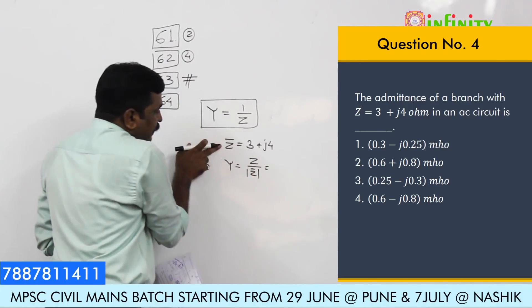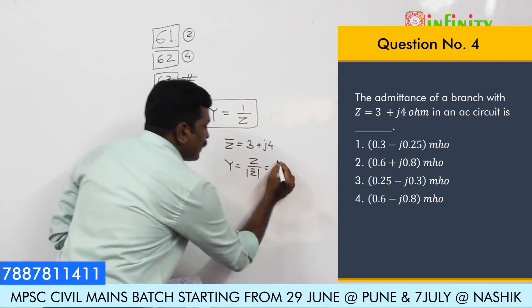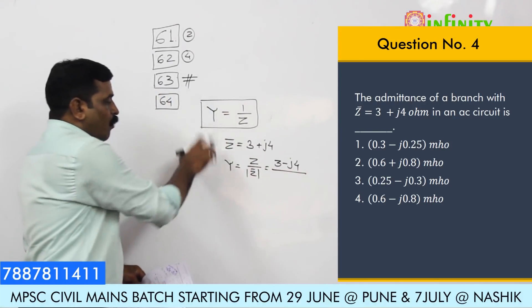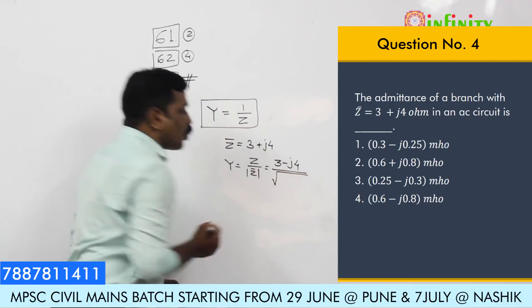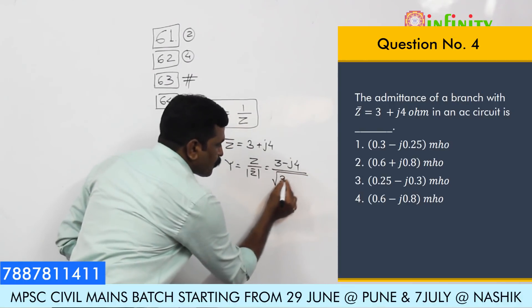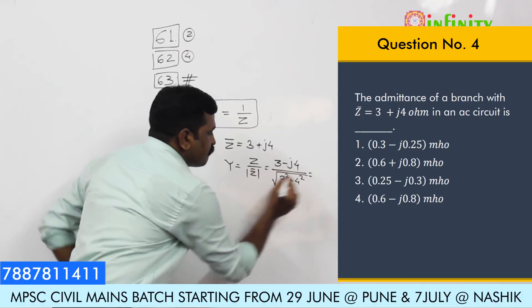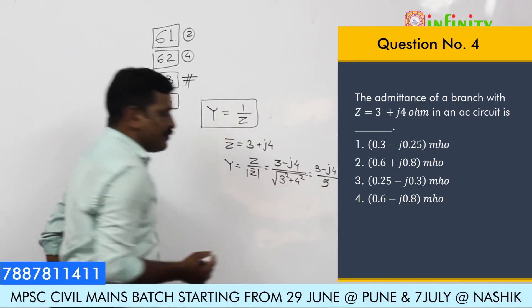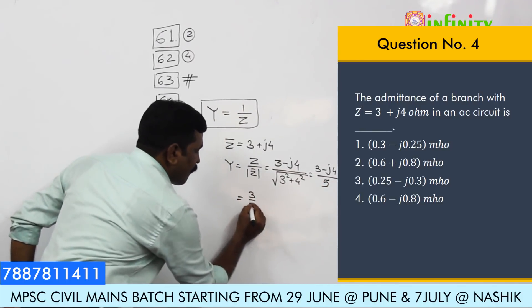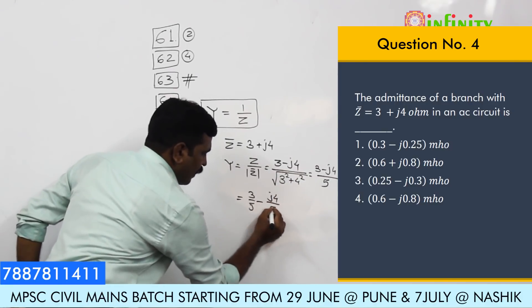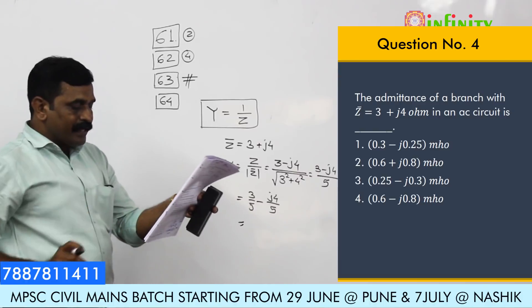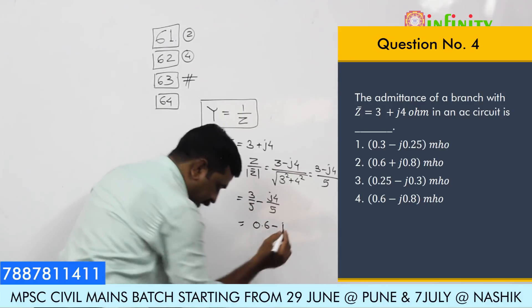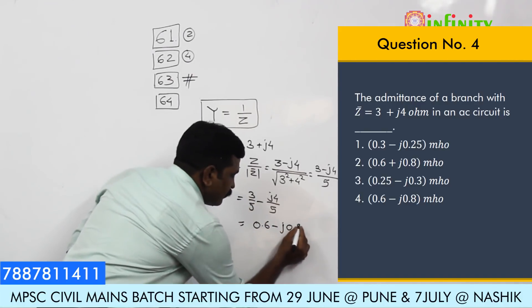Z-bar is 3 plus j4, so Z-conjugate is 3 minus j4. The modulus is the square root of 3 squared plus 4 squared. Simplifying, we get (3 minus j4) divided by 5, which gives 3/5 minus j(4/5). After simplification the answer is 0.6 minus j times 0.8.